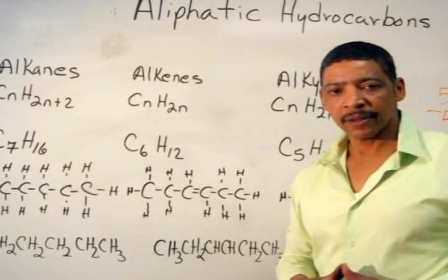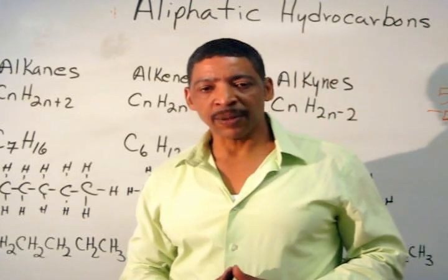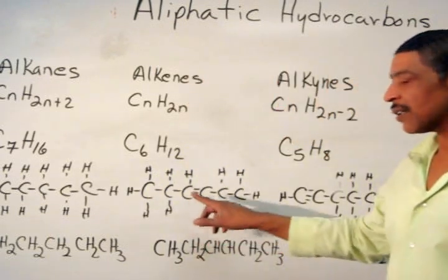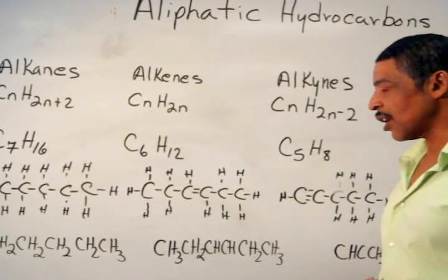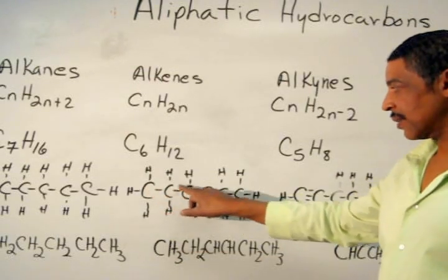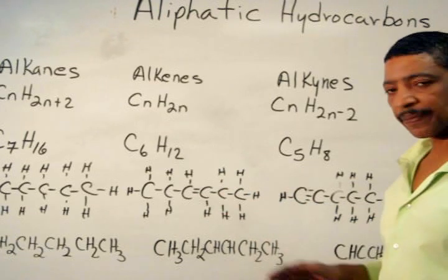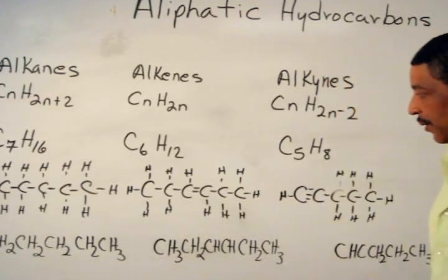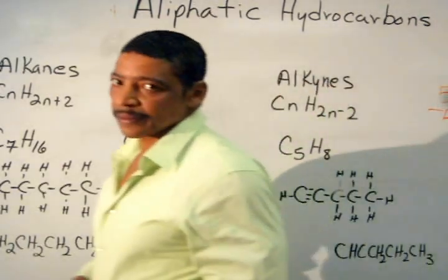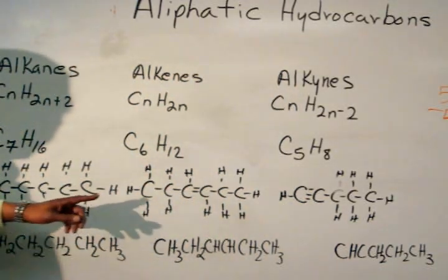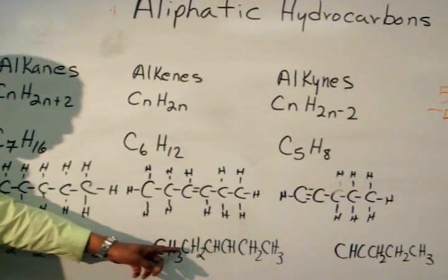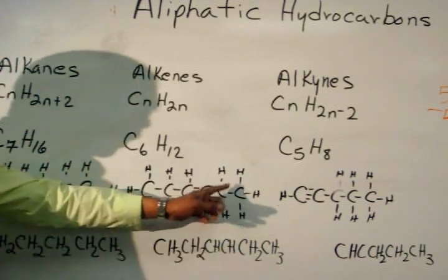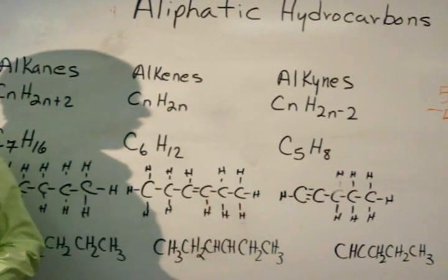It is necessary to assign a number to the location of the double bond. By rule, the location of the double bond must be assigned the lowest possible number. The fact that this double bond is in the middle of the compound means that numbering may begin from the left or the right. To write the condensed formula for this compound, simply copy the structural formula: CH3, CH2, CH, CH, CH2, and CH3.